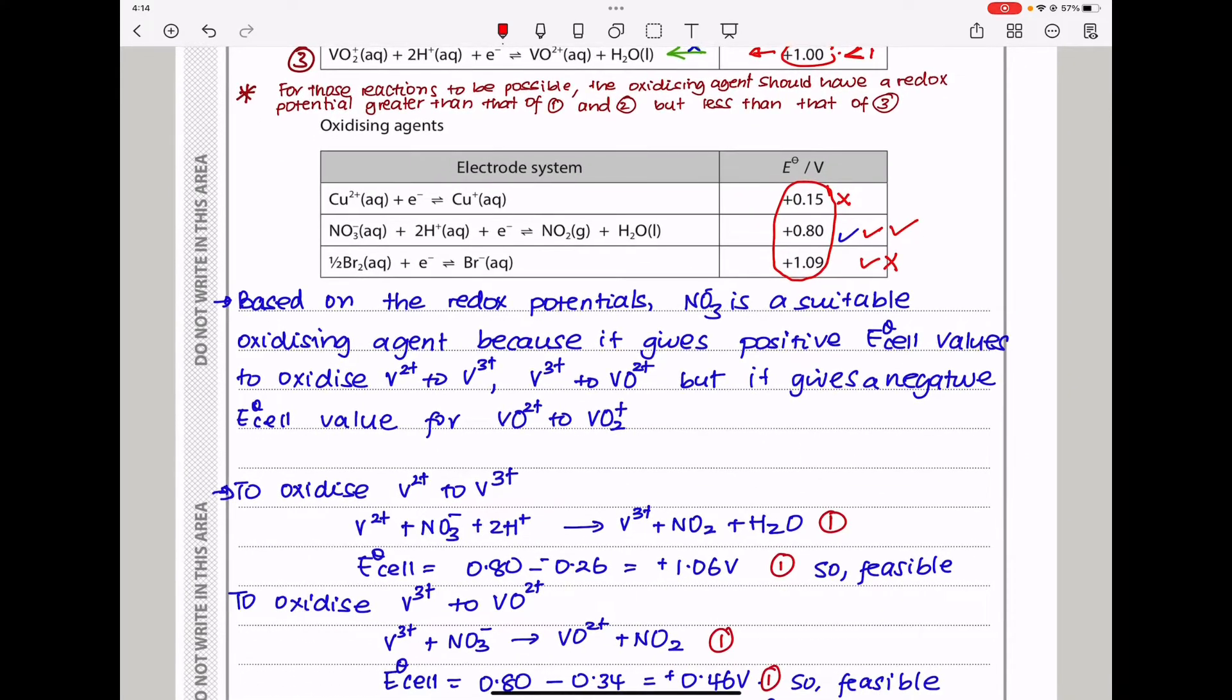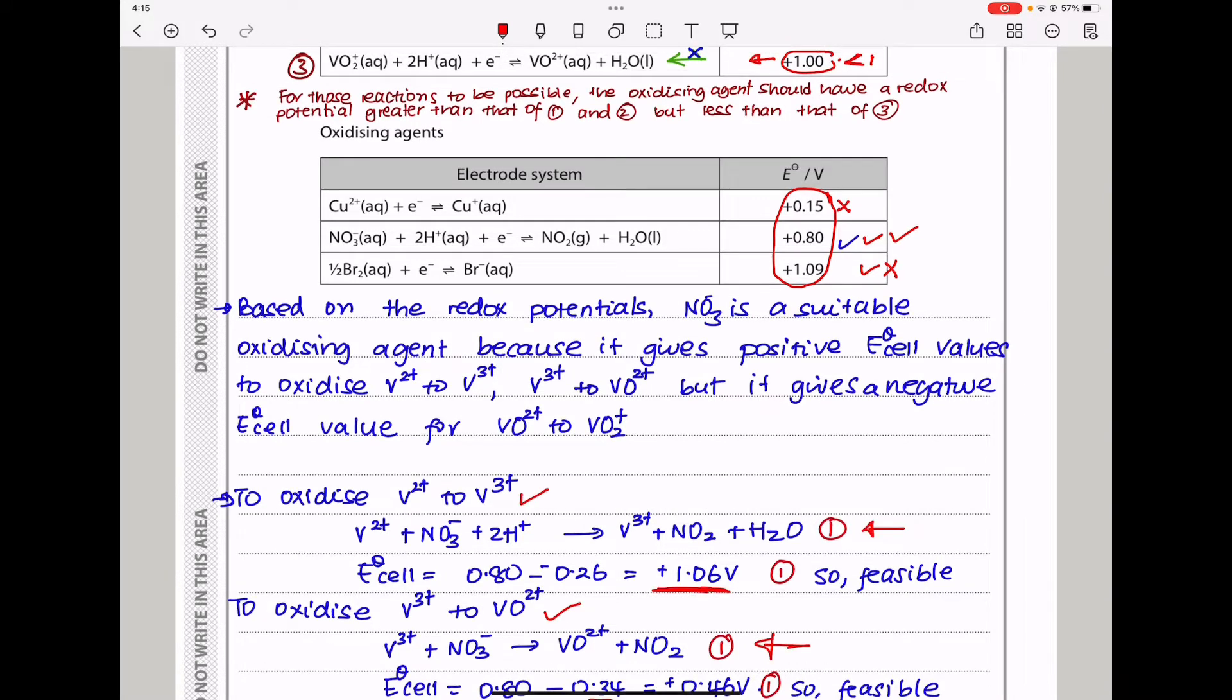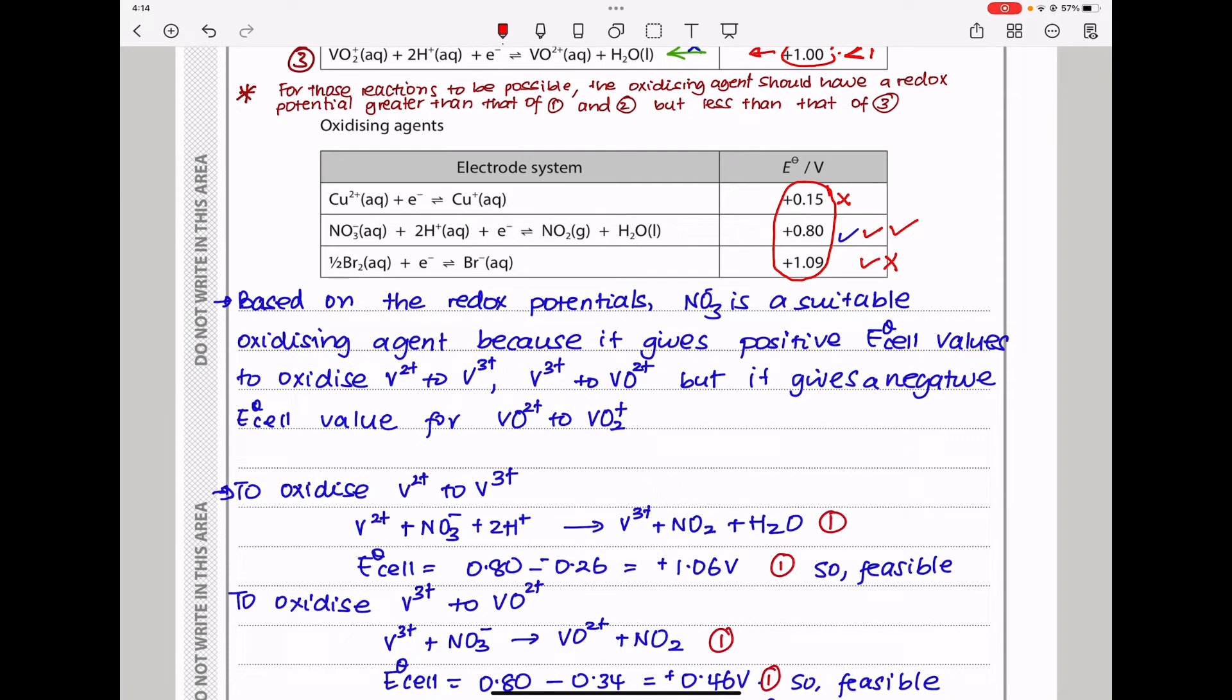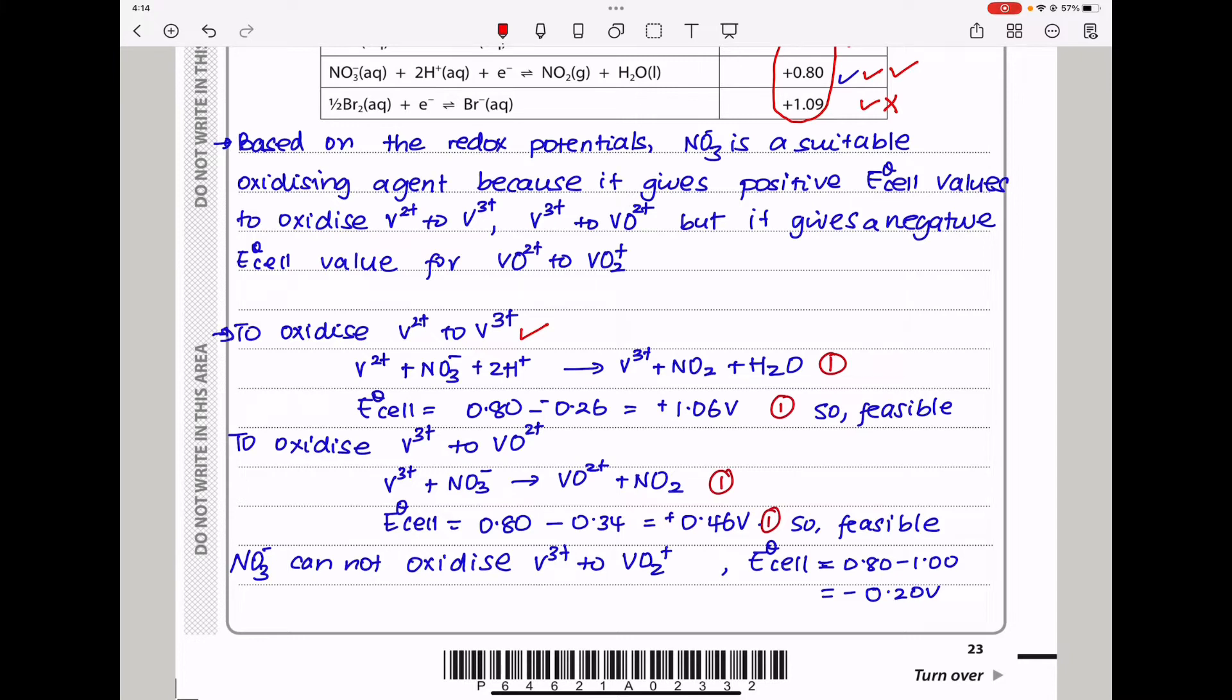So, my answer is nitrate. Based on the redox potentials, NO3- is a suitable oxidizing agent because it gives positive E cell values to oxidize vanadium 2 to vanadium 3, vanadium 3 to 4, but it gives a negative E cell value for vanadium 4 to vanadium 5. To convert vanadium 2 to vanadium 3, this should be the overall equation for that reaction and the E cell value should be that and therefore, this reaction should be feasible.